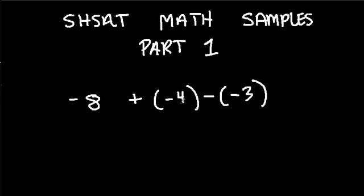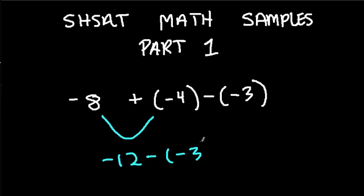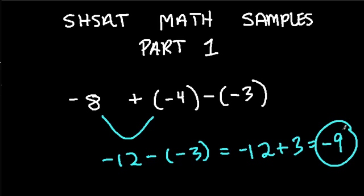Let's start with this one. Here we're just adding two negative numbers and then subtracting a negative number. We work from left to right. What's negative 4 and negative 8? That's negative 12. Then we're going to subtract negative 3 from that, which is the same thing as adding 3. If we're sitting at negative 12 on the number line and we add 3, we'll end up at negative 9. So there, we're just getting a refresher on adding and subtracting with negative numbers.